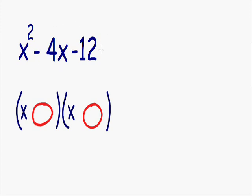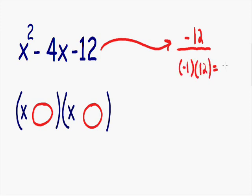So let's try and find these numbers by listing all the possible numbers that multiply and give us negative 12. So we know that negative 1 times positive 12 gives us a negative 12. Also a positive 1 times negative 12 gives us a negative 12.